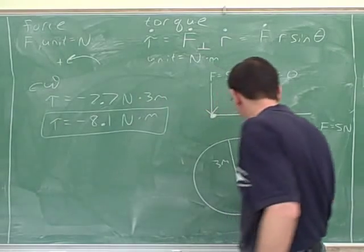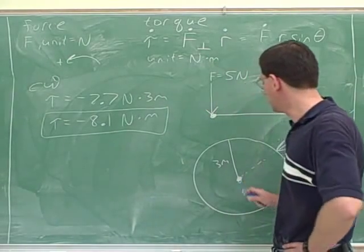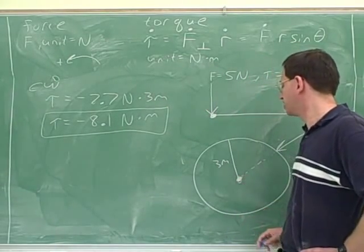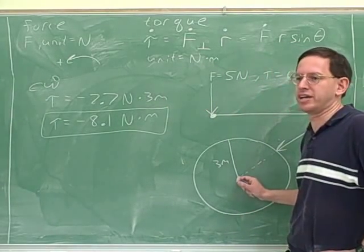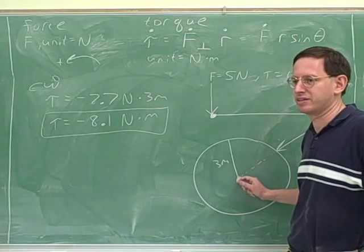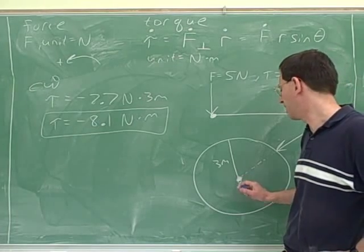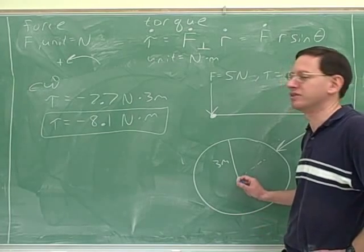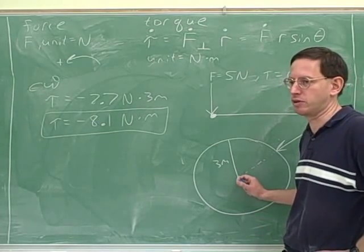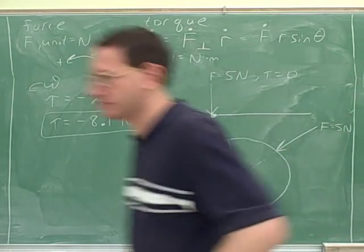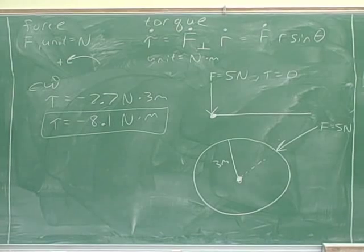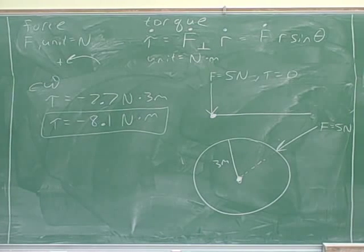I would just put a dot there for the pivot. How do you know this is the pivot? Well, I just told you that we're rotating around this point. If this is a wheel, this is where you would expect to rotate around. You might write 'pivot' there if you thought you were going to forget.